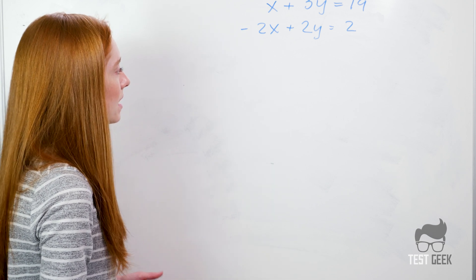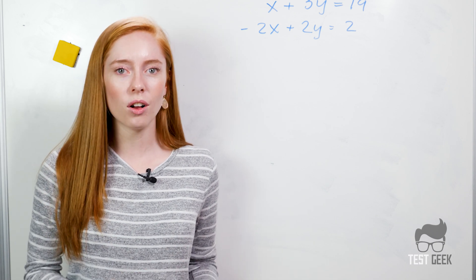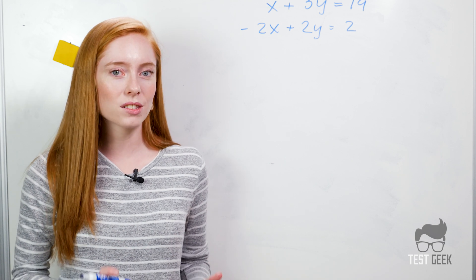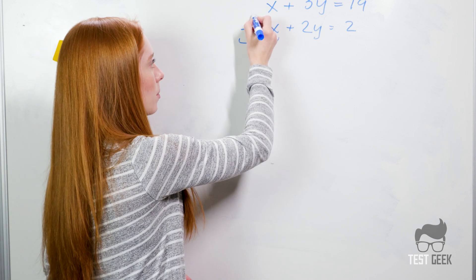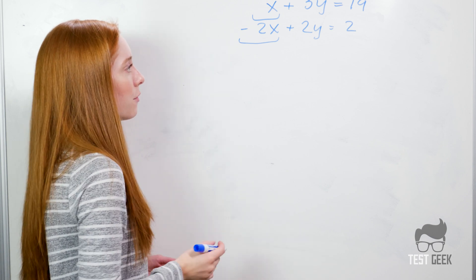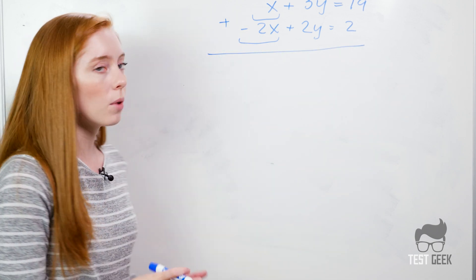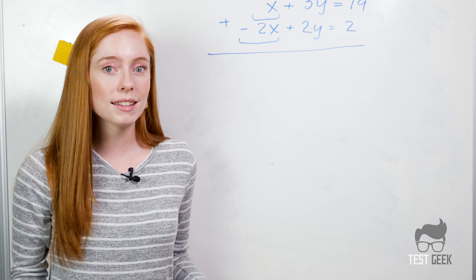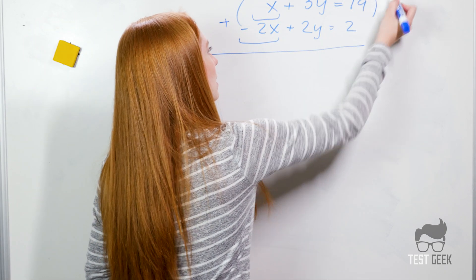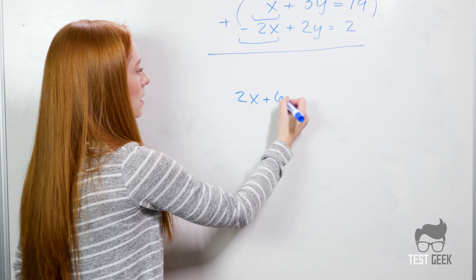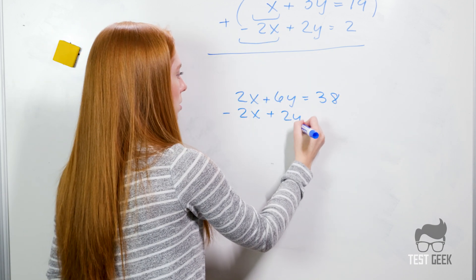We have x plus 3y equals 19, and another equation that's negative 2x plus 2y equals 2. We have two variables — we can call this a system of equations. There are a few ways we could solve this. I notice we have a negative 2x and a positive x on the top. One option for solving a system of equations is to add them straight down. To do that, we'd want to cancel out one of our variables. We can multiply our first equation by 2 to get a 2x on top. So we get 2x plus 6y equals 38, and the bottom equation stays the same: negative 2x plus 2y equals 2.